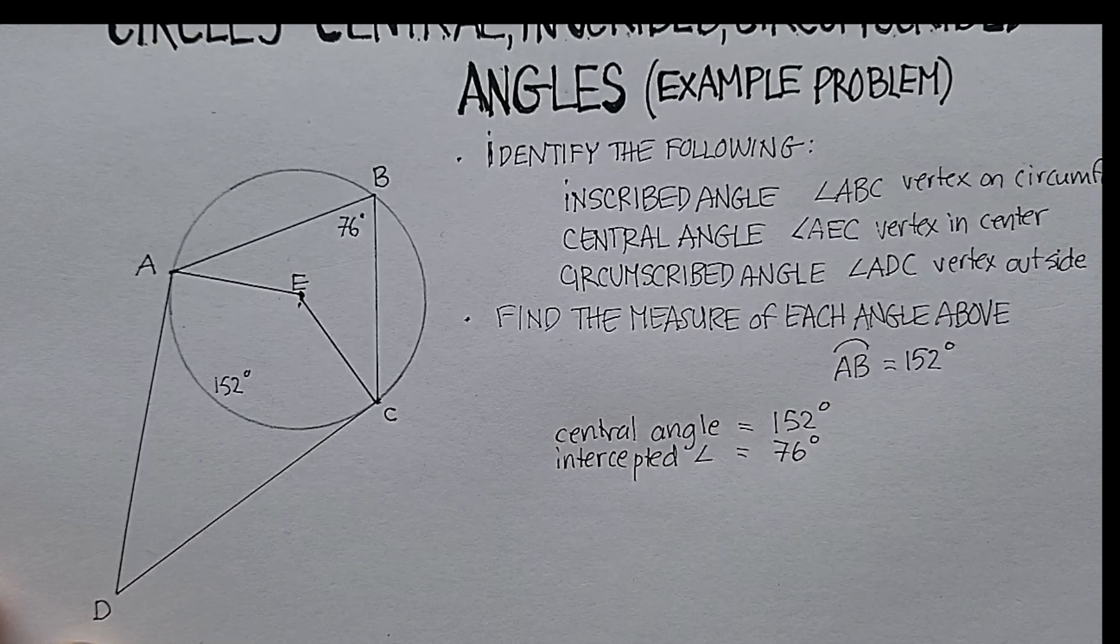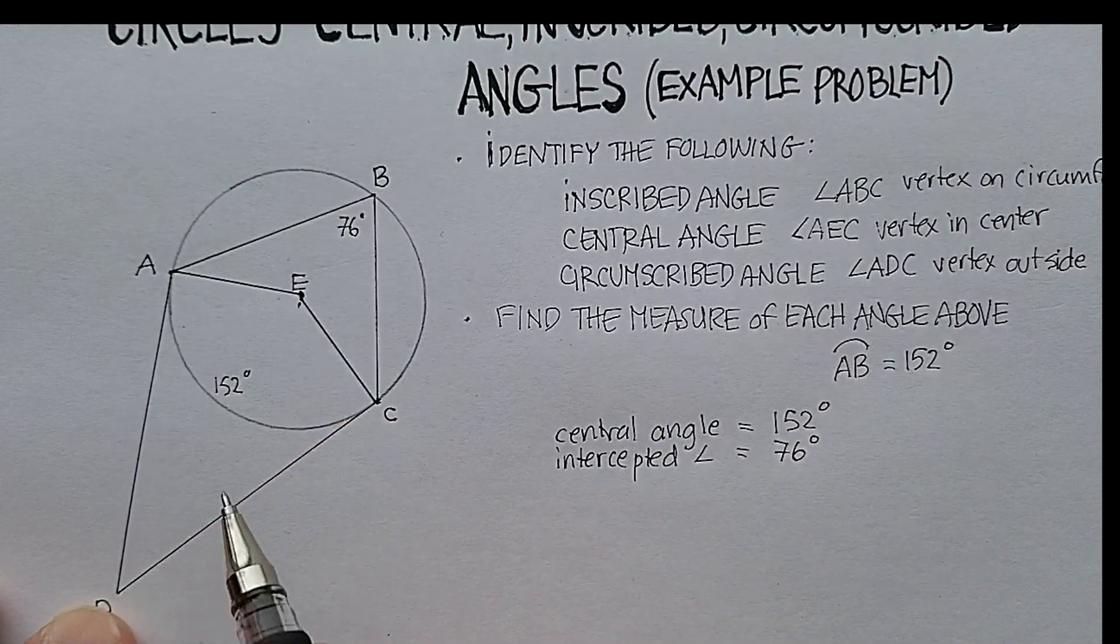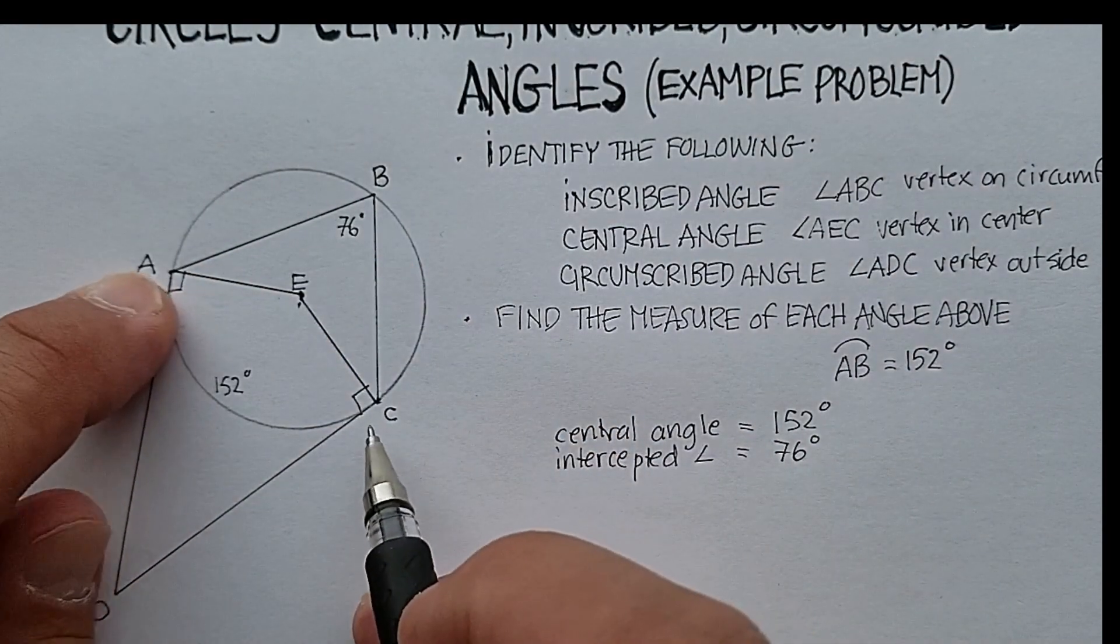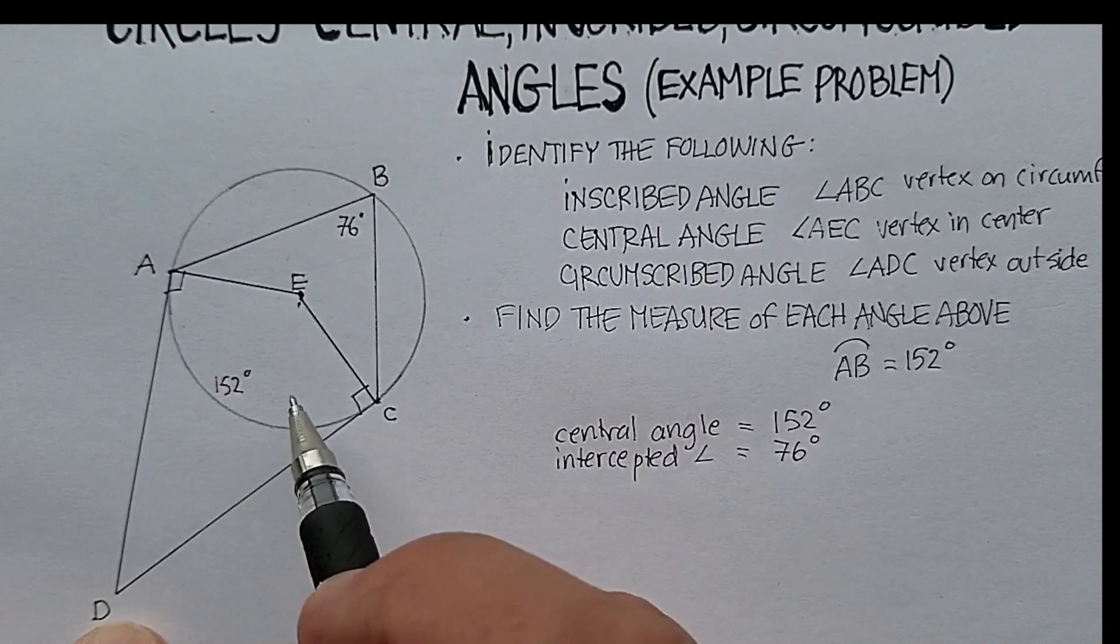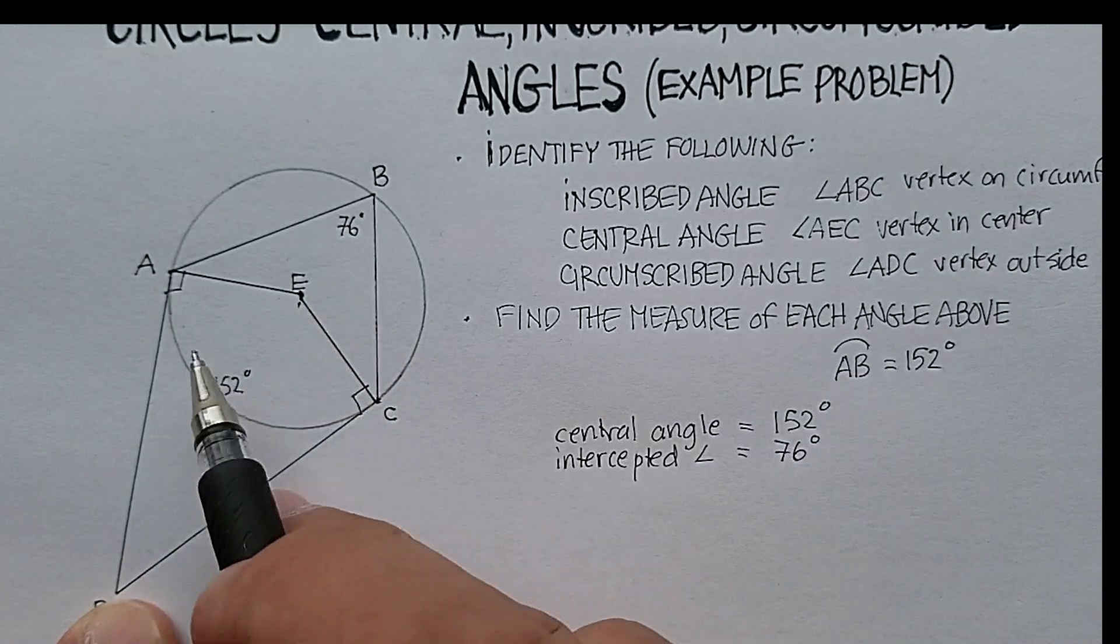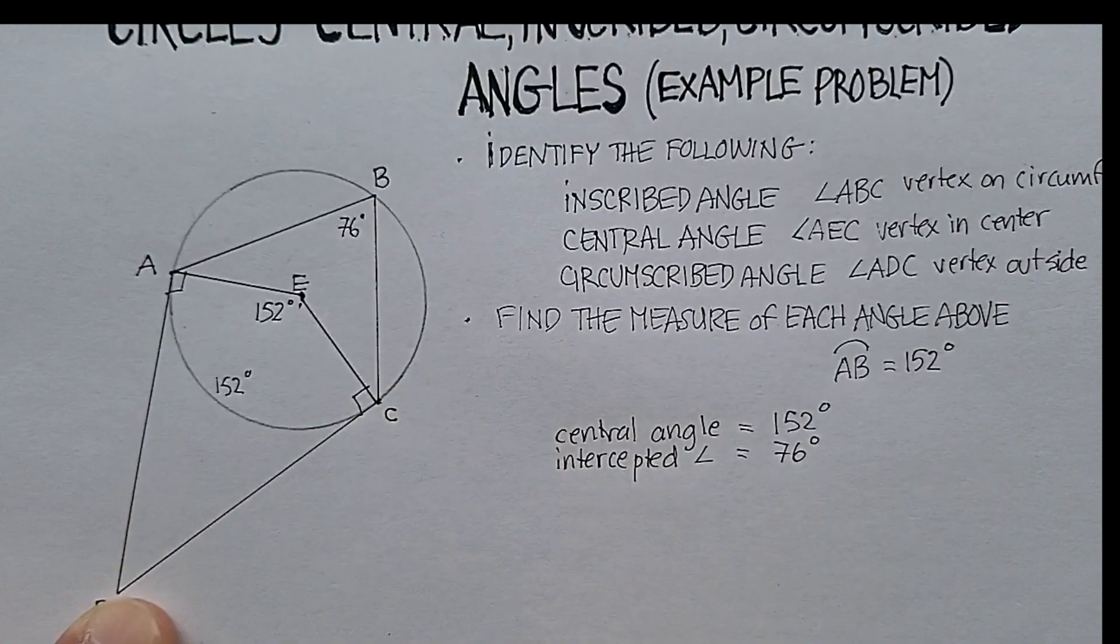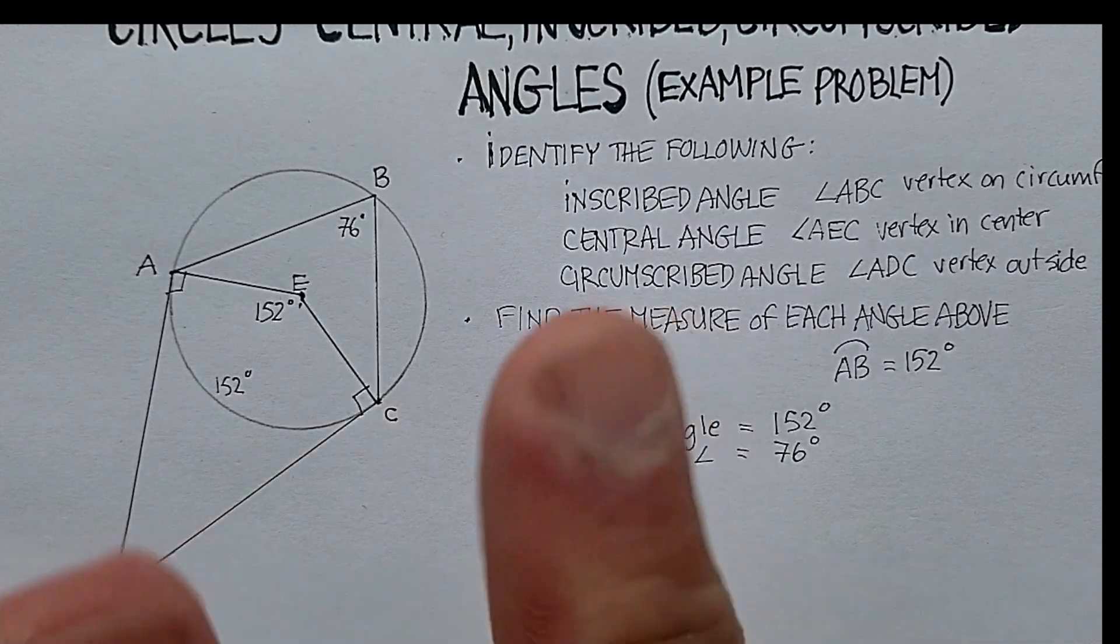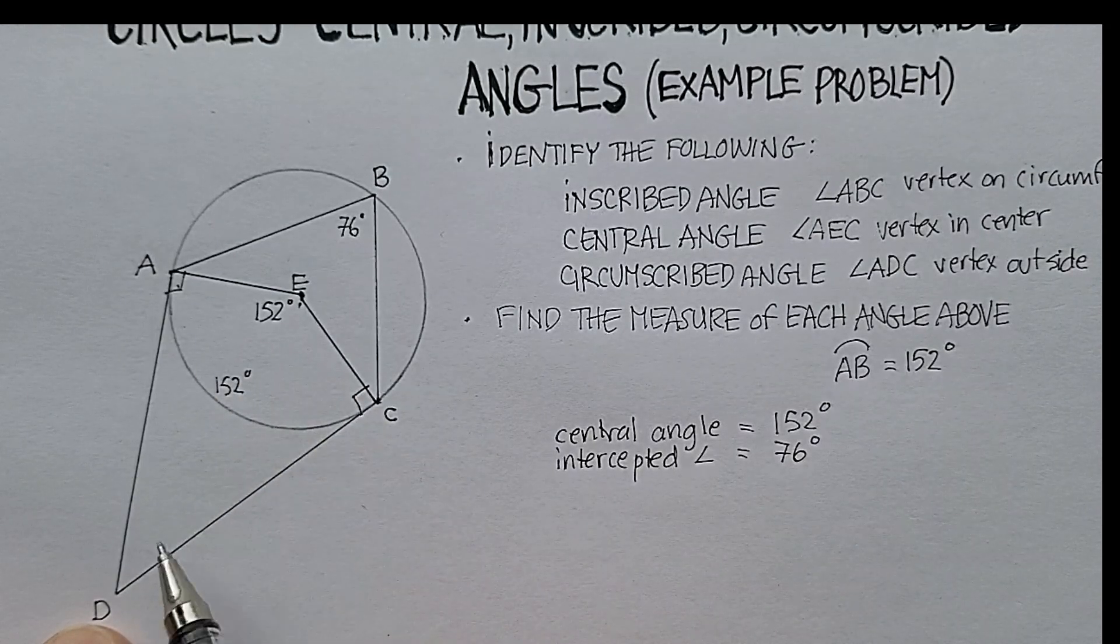Now here's another interesting property of a circumscribed angle. You know that it forms two tangent lines with the circle, which means that this particular angle and this particular angle are perpendicular to the center. So it forms a four-sided figure called a kite. Now we just figured out that angle AEC was the same as the intercepted arc, so this is 152. Now you could find angle ADC two ways. You could just add up 90 plus 152 plus 90, subtract from 360, and get angle D.